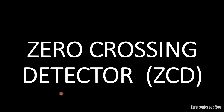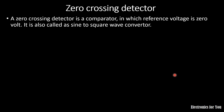Hello friends, this video is about zero crossing detector, in short known as ZCD. A zero crossing detector is a comparator in which the reference voltage is zero. It is also called as sine to square wave converter because it converts a sine wave into a square wave.